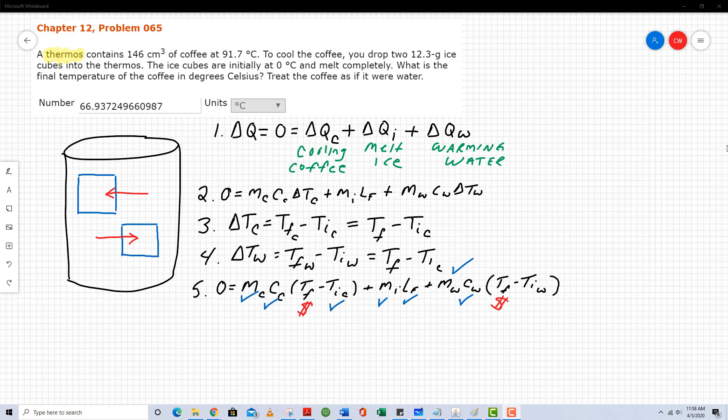Again, the ice is going to melt completely. And the third term is MC delta T again. But for this case, it's mass of the water times the specific heat capacity of the water times the water's change in temperature. The water resulting from the melted ice is, once again, going to warm up.